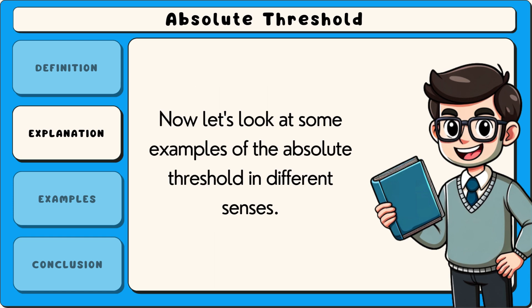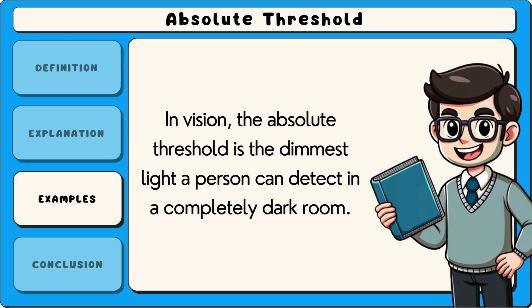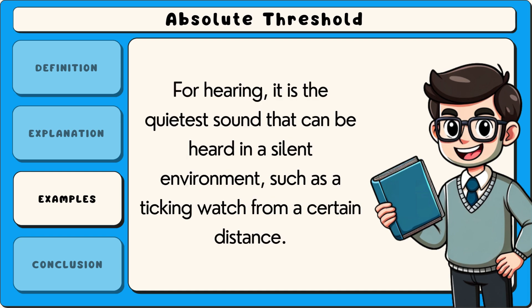Now let's look at some examples of the absolute threshold in different senses. In vision, the absolute threshold is the dimmest light a person can detect in a completely dark room. For hearing, it is the quietest sound that can be heard in a silent environment, such as a ticking watch from a certain distance.